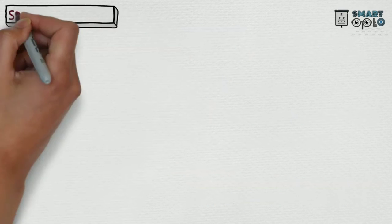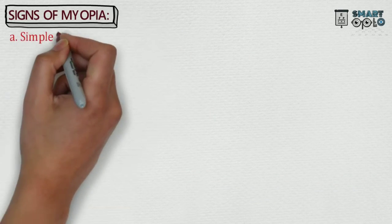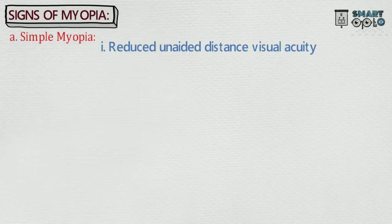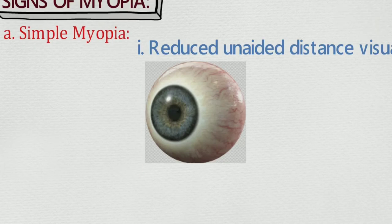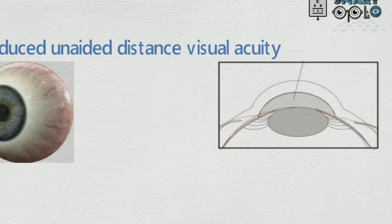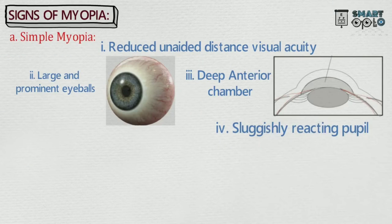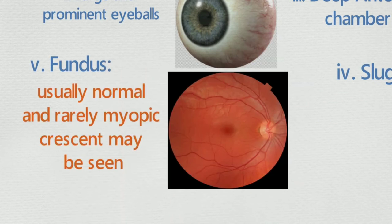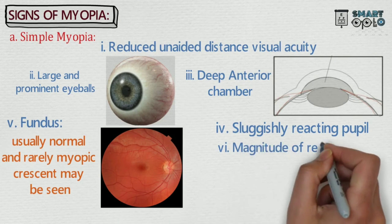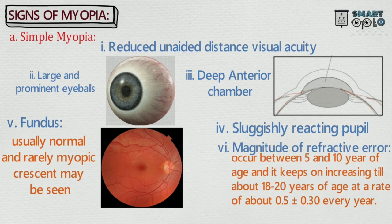Now let's study about signs of myopia. A. Simple myopia — signs are: 1. Reduced unaided distance visual acuity. 2. Large and prominent eyeballs. 3. Deep anterior chamber. 4. Sluggishly reacting pupils. 5. Fundus: usually normal, and rarely myopic crescent may be seen. 6. Magnitude of refractive error: occurs between 5 and 10 years of age and keeps increasing till about 18 to 20 years at a rate of about 0.5 ± 0.30 diopters every year.